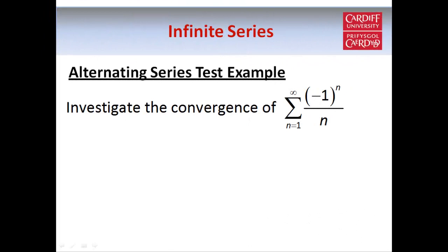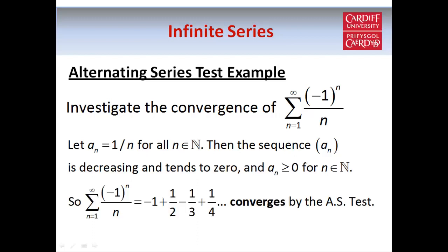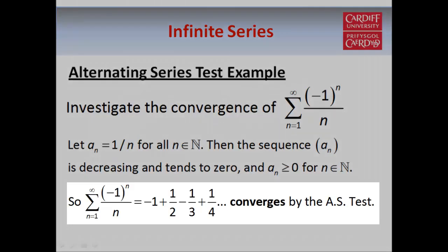Here's a simple example. The terms in our series are given by (-1)^n times 1/n. In this example, 1/n is decreasing as n increases, and 1/n tends to 0 as n tends to infinity, and 1/n is always non-negative. Therefore, by the alternating series test, we can say that our series — which goes -1 + 1/2 - 1/3 + 1/4, etc. — is convergent.